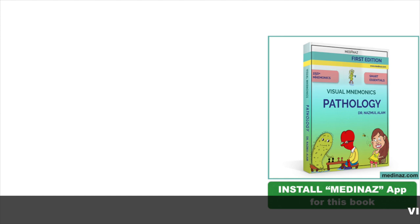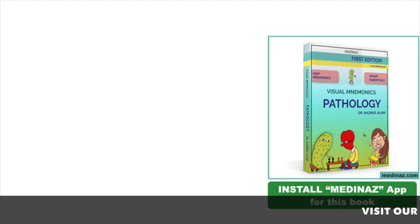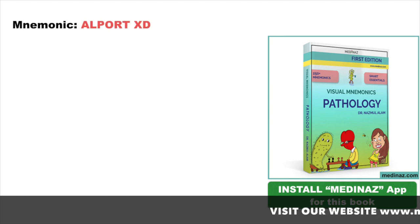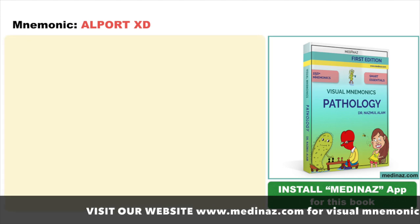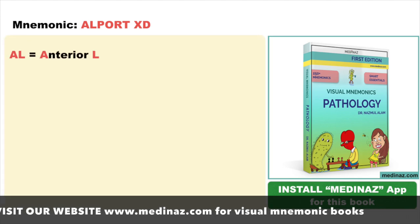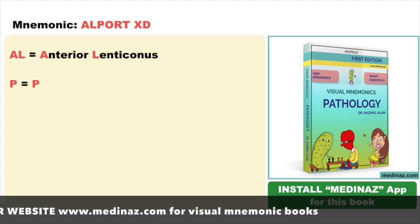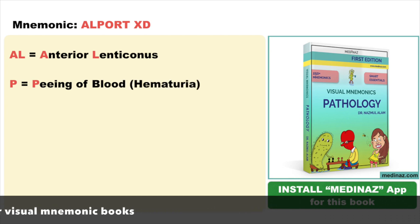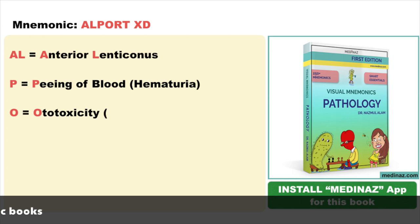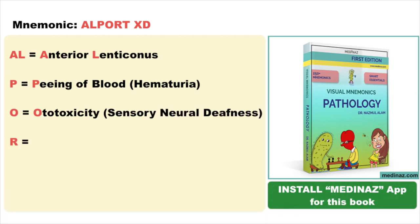You can also remember all these points with a simple mnemonic: ALPORT XD. Follow the red letters. AL is for anterior lenticonus. P is for peeing up blood, which is hematuria. O is for ototoxicity, which is sensorineural hearing loss.